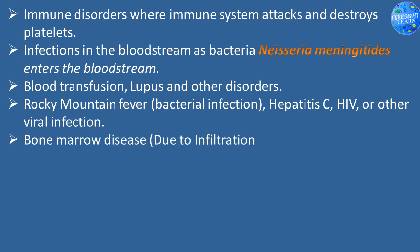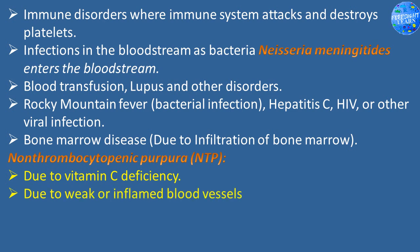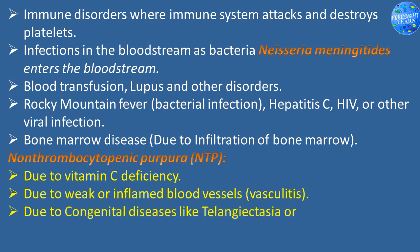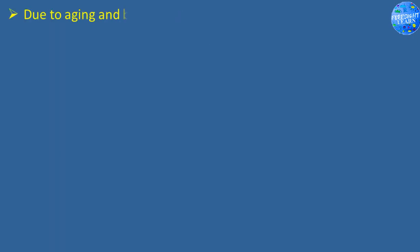Bone marrow disease due to infiltration of bone marrow. Non-thrombocytopenic purpura (NTP): due to vitamin C deficiency, due to weak or inflamed blood vessels (vasculitis), due to congenital diseases like telangiectasia or Ehlers-Danlos, due to inherited disorders and blood clotting disorders, and due to some medications.